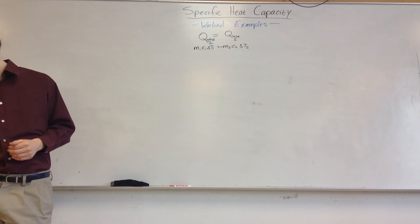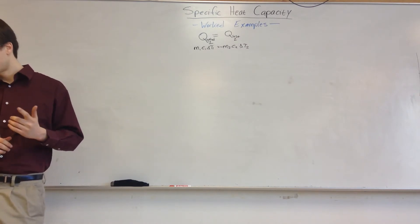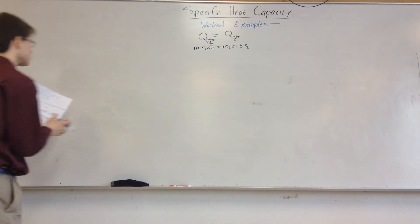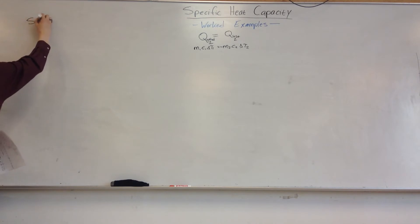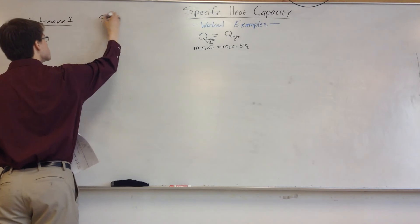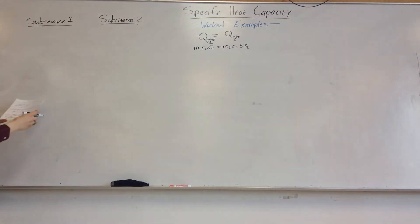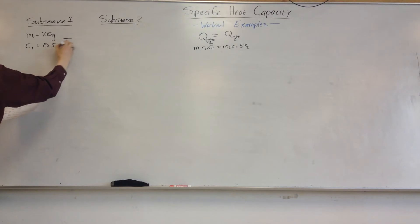So we can apply this to solve a few problems. Let's start off with something like this. Let's say we have substance one and substance two. Let's say substance one has 20 grams of mass. Let's say it has a heat capacity of 0.5 joules per gram degrees Celsius. And let's say that it starts off at a temperature T1 of 20 degrees Celsius.